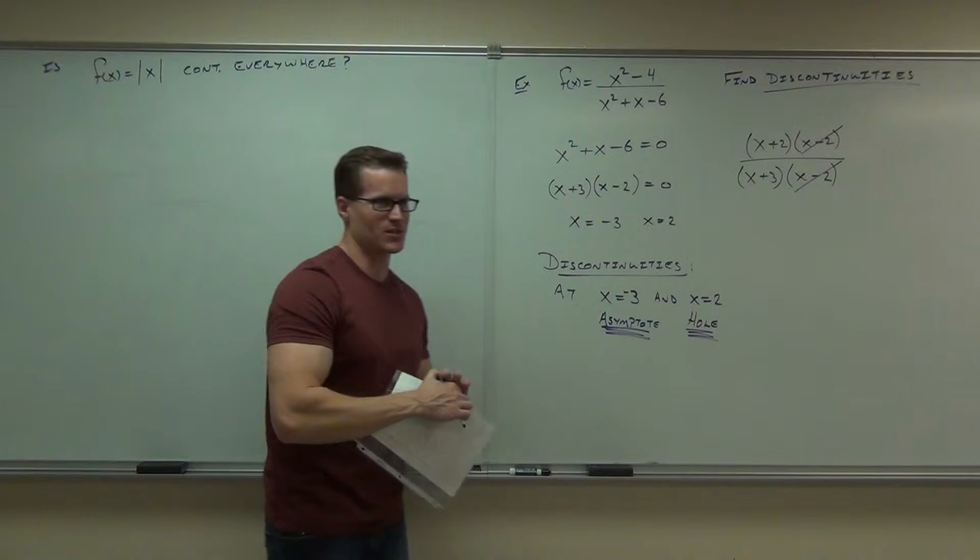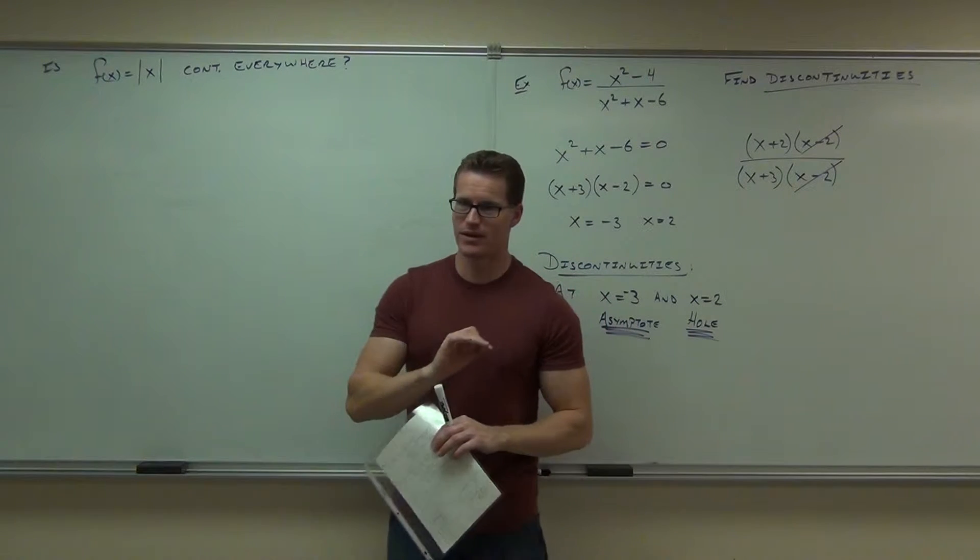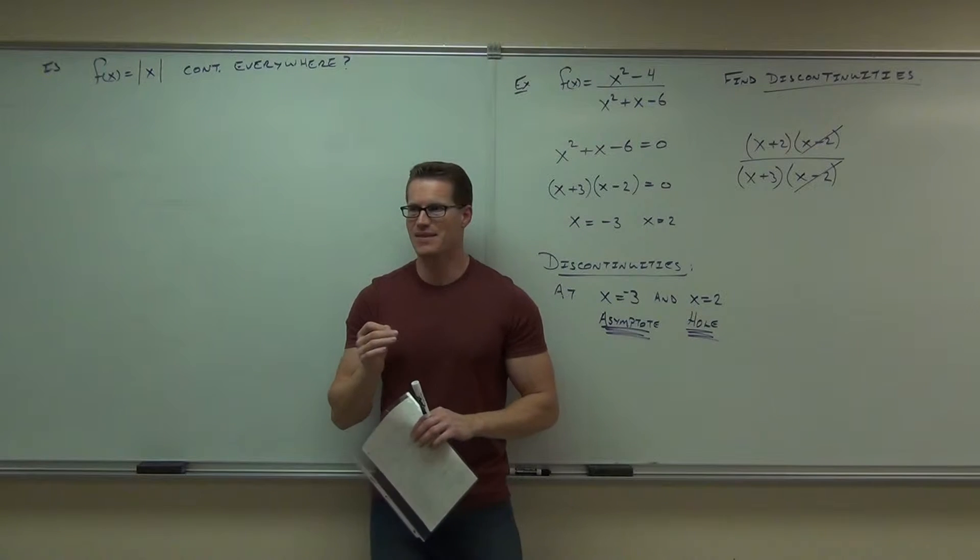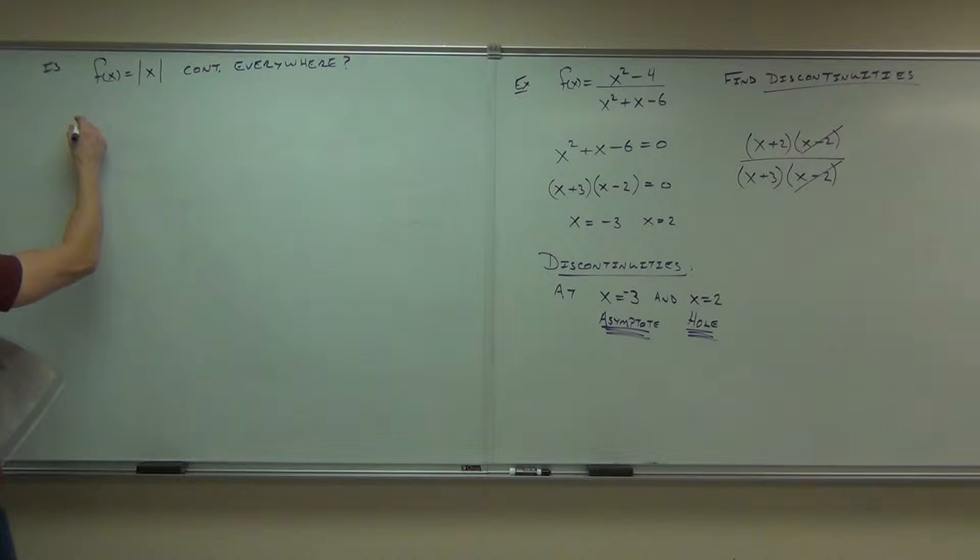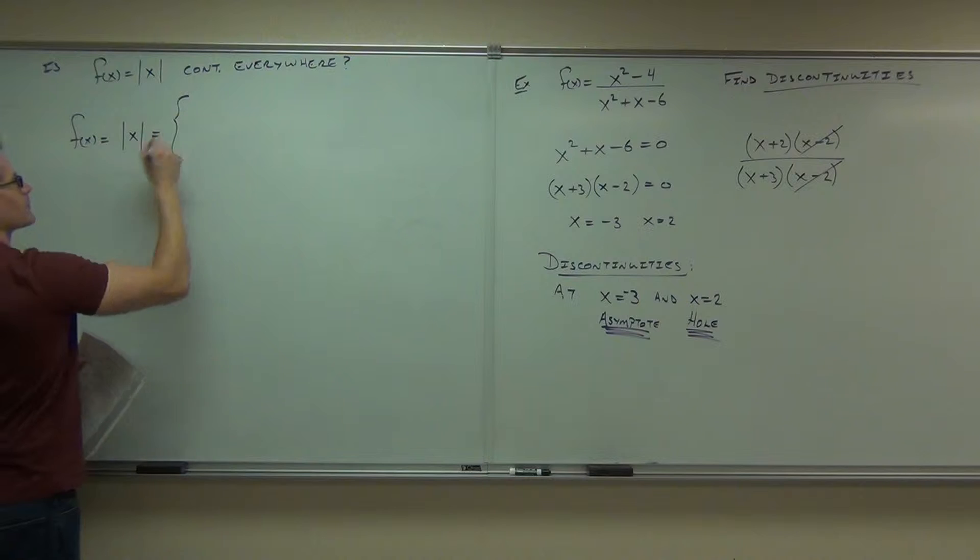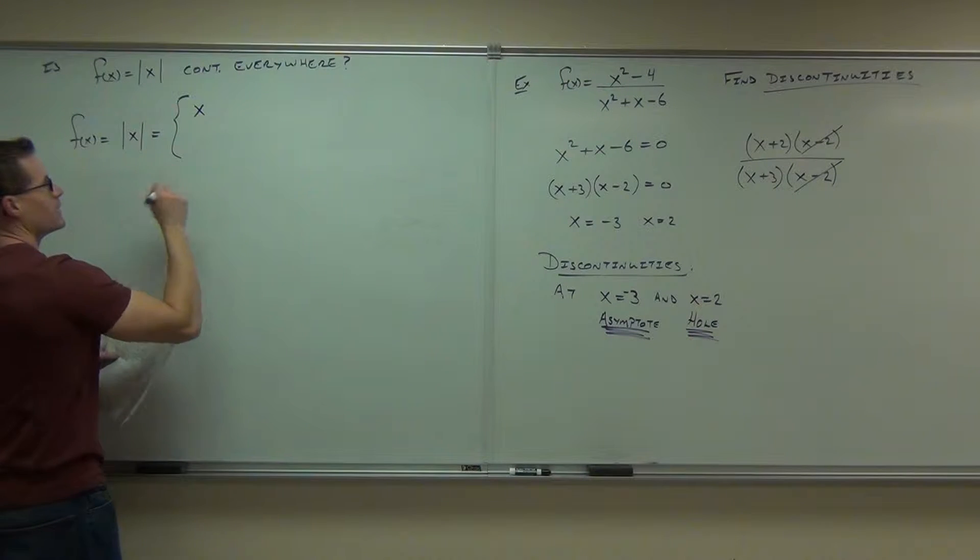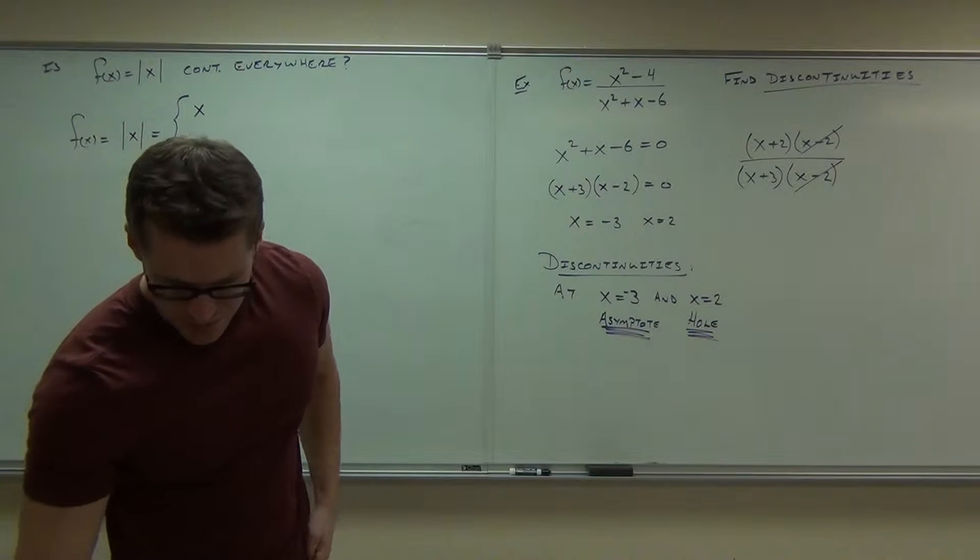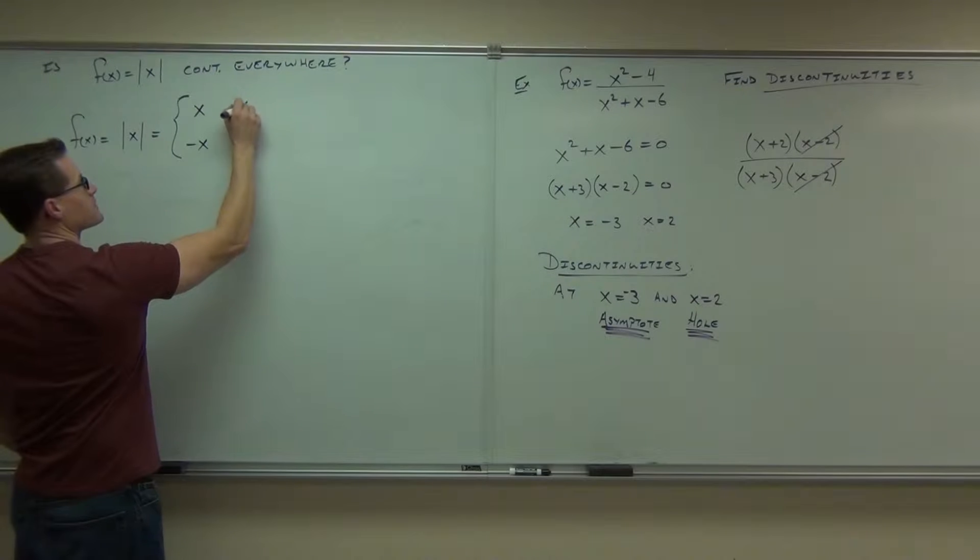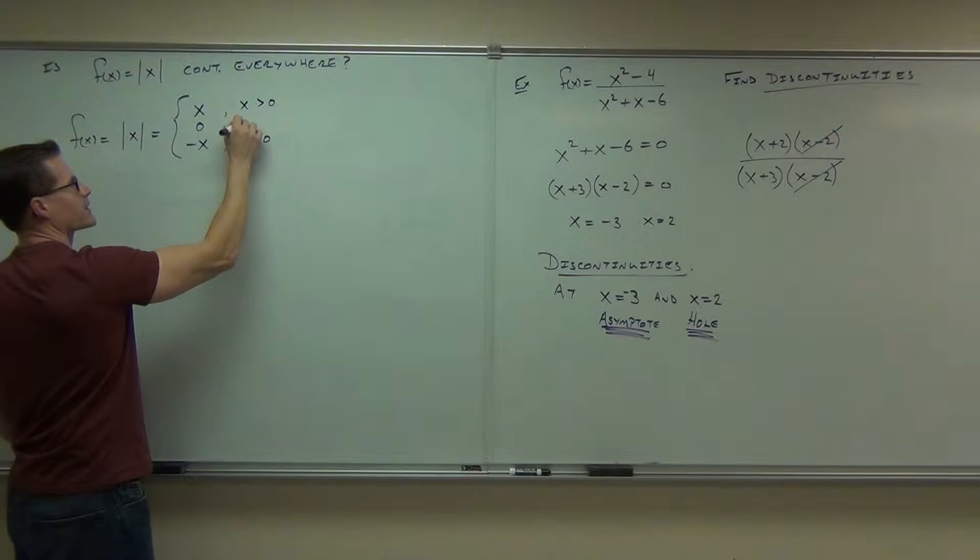Here's some limits. What we want to prove for continuity is that the limit exists at every point, that the limit equals the function value at every point, and that even at that weird place where it comes together, that exists. So here's how we're going to define it. We're going to define absolute value of x in an interesting way. Absolute value of x is x for x greater than 0, negative x for x less than 0, and 0 for x equals 0.